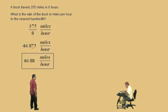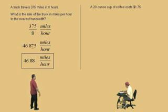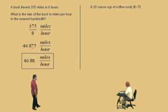Okay Charlie, so now this was a rate and now we're going to go to unit price. Well, let's talk about this unit price problem. It says a 20 ounce cup of coffee costs $1.75. What is the unit price in cents per ounce for this cup of coffee to the nearest cent? So be careful, you've got to read these questions carefully. Okay, so we're looking for the ratio of cents per ounce. But look at the information we're given, Charlie.